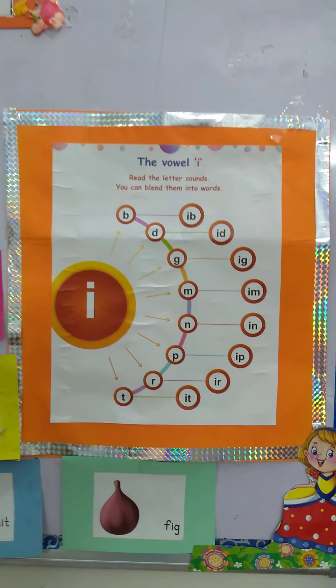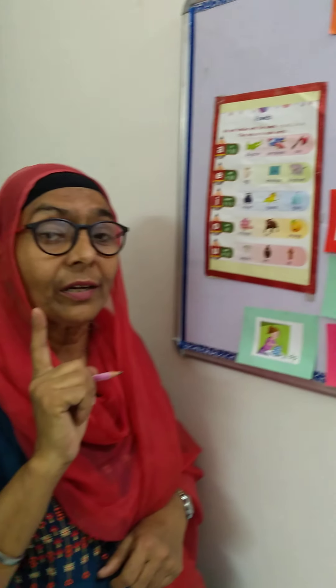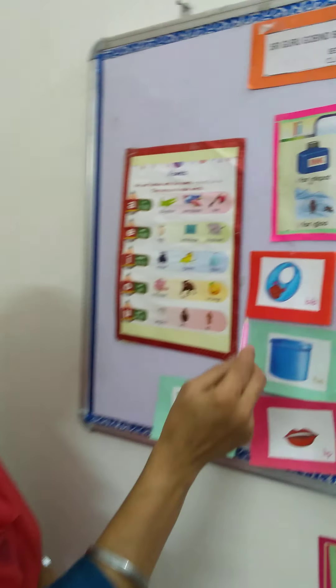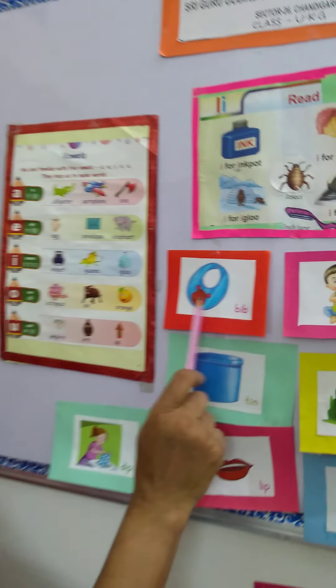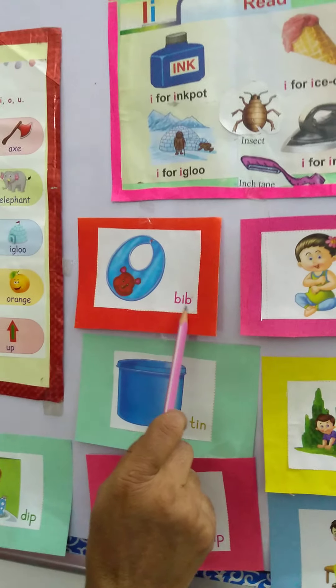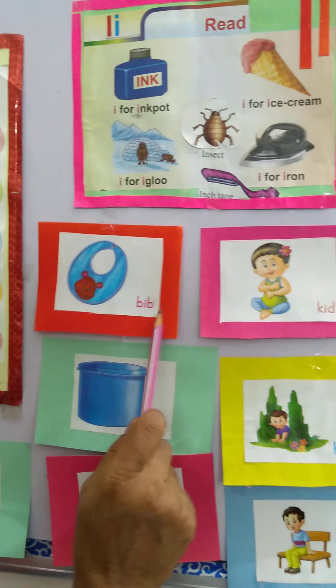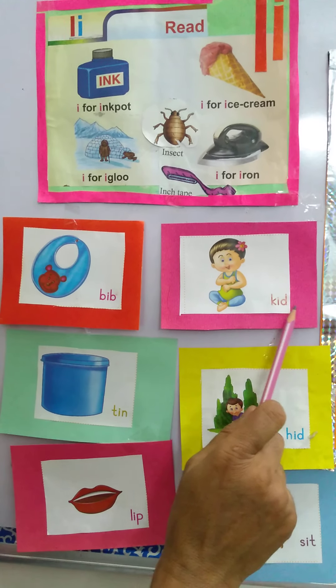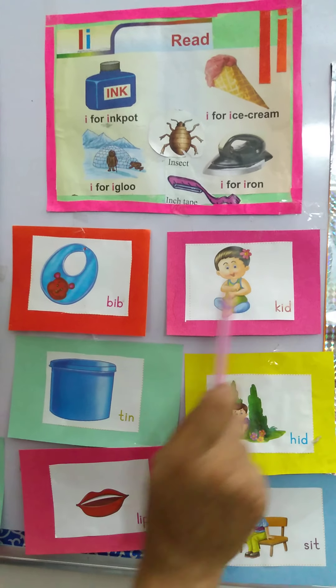Now here are many flashcards for us to do reading. You look here. This is bib — B, E, B. K, E, D — kid. This is kid.